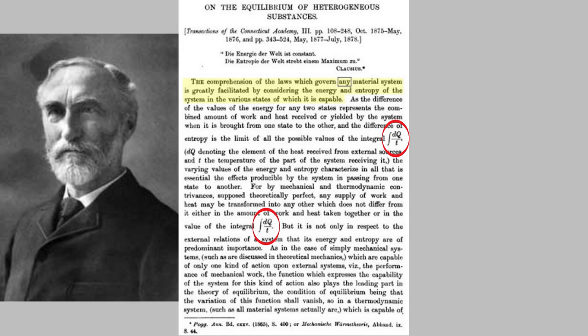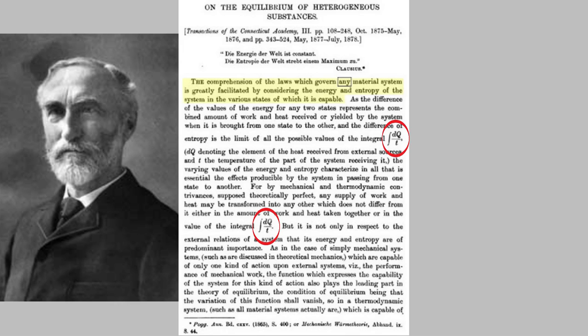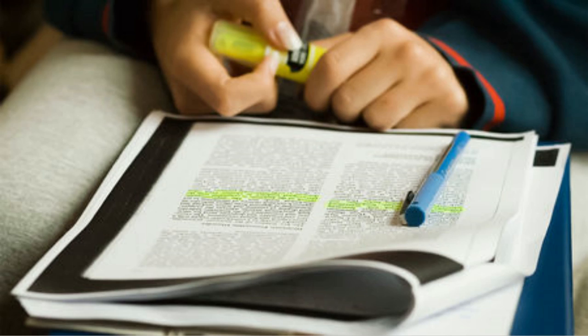It might have faded into obscurity, but luckily, it was noticed by the Scottish physicist James Clerk Maxwell, who recognized that Gibbs had made an important discovery and publicized it so that other scientists would hear about it. It really pays to learn to talk about your work when you're a scientist. It's one reason you learn to write good lab reports on your experiments when you take a chemistry course in college.